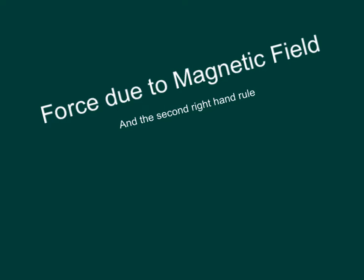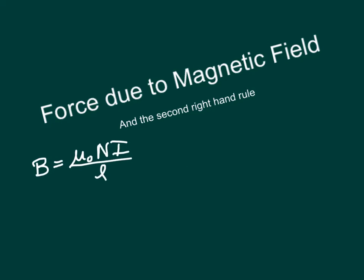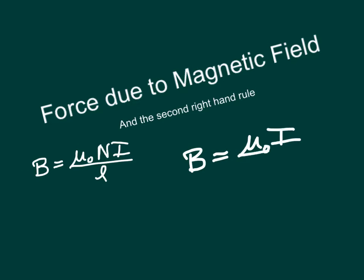In class we got the equation for the magnetic field produced by a solenoid, which was B equals mu naught N times I over L. And in the last video we got B equals mu naught I over 2 pi R.